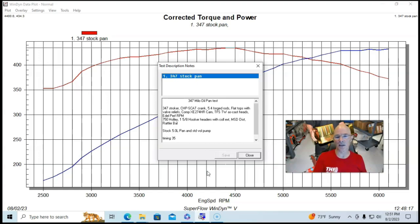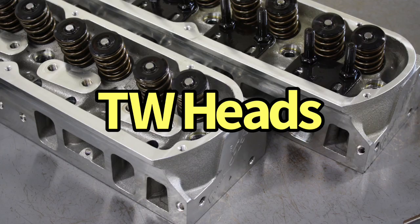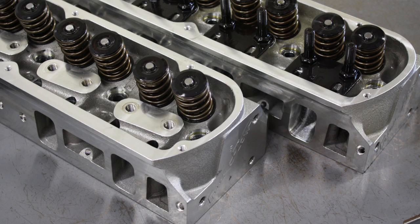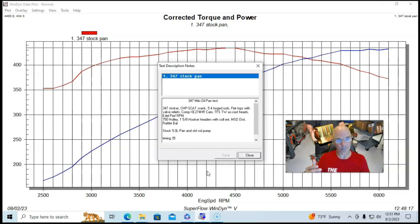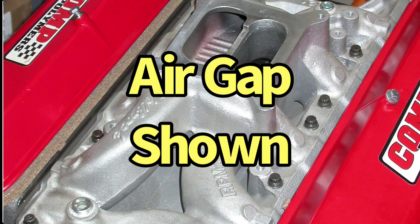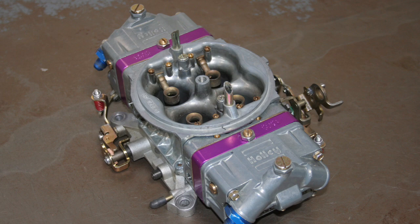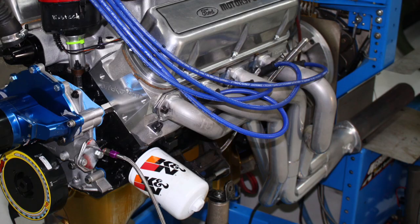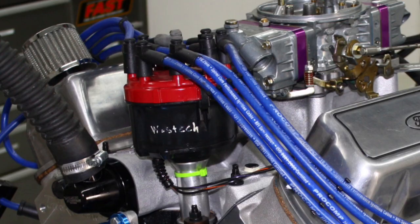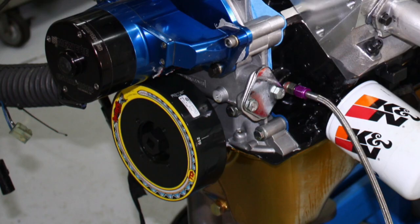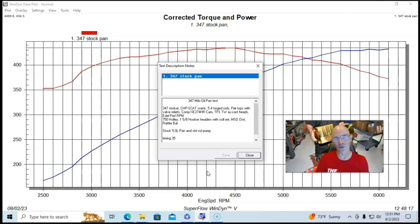We topped this 347 for this test with Trick Flow twisted wedge as-cast heads. We ran an Edelbrock Performer RPM non-air gap intake manifold. We ran a 750 Holley. We had inch and five eighths Hooker long tube headers and MSD distributor. And also they're showing a Rattler balancer, probably something that we had laying around that I needed a damper for.